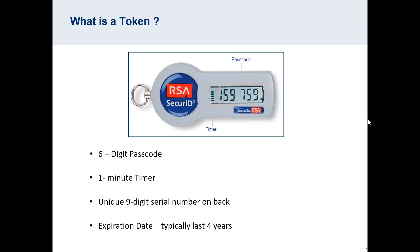RBC Express is a multi-user online banking platform that uses RSA secure ID tokens as an additional security measure. The device will be sent to you in the mail, and you'll notice that on the screen of the device is a six-digit passcode that changes once a minute. You'll also notice on the back of the device is a nine-digit serial number and an expiration date. Tokens typically last four years.